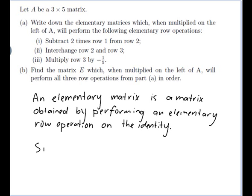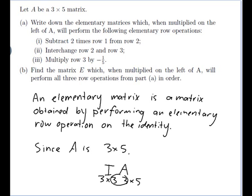Since A is 3 by 5, multiplying on the left means the elementary matrix goes like E × A, where A is 3 by 5. So E would have to be 3 by 3 so that the dimensions match. Therefore, since A is 3 by 5, the identity is 3 by 3.